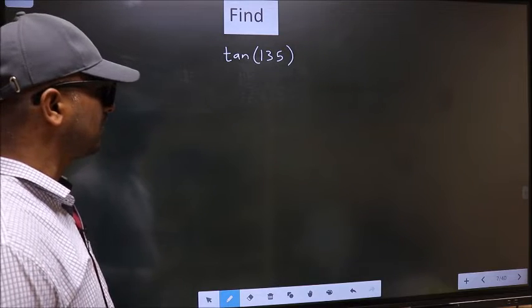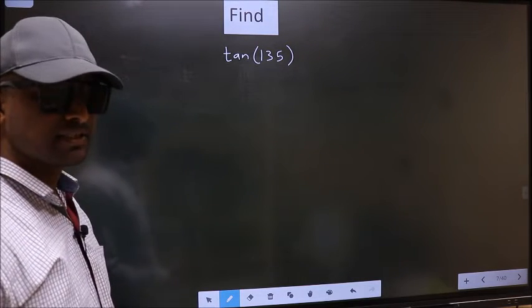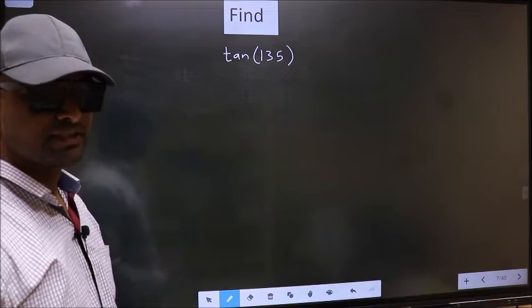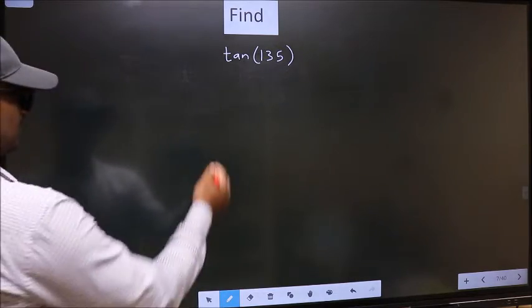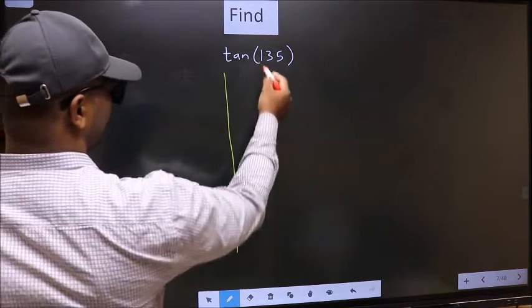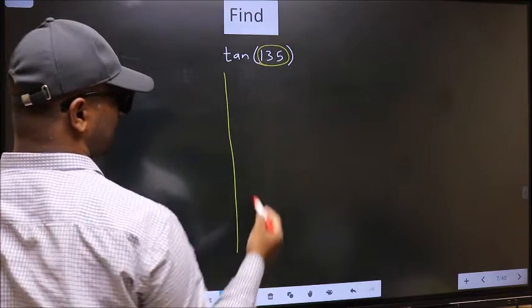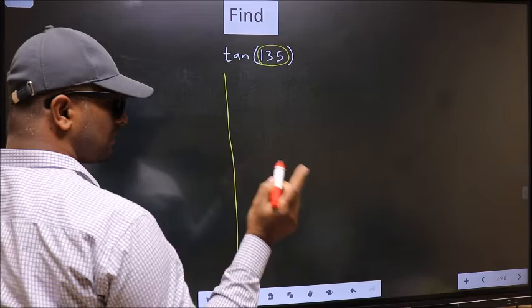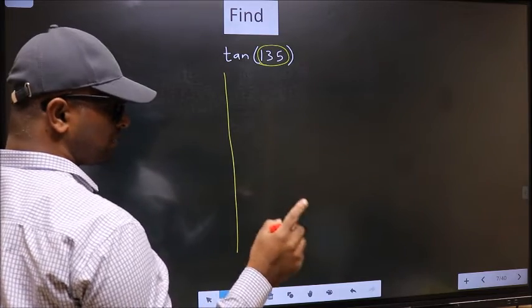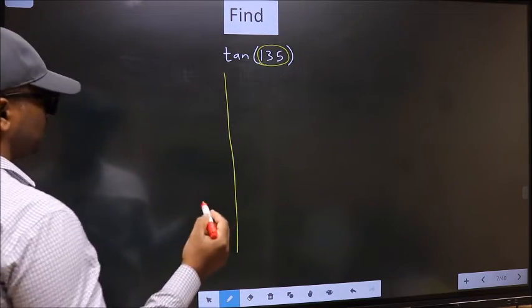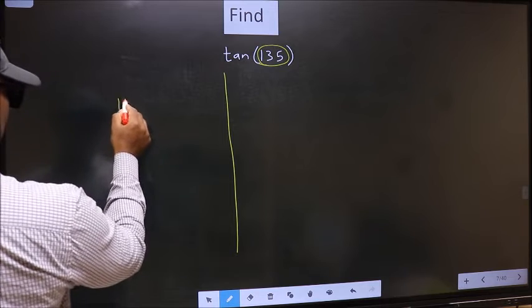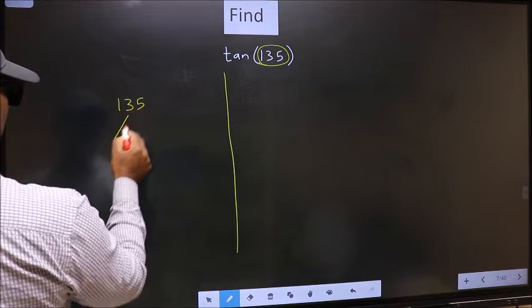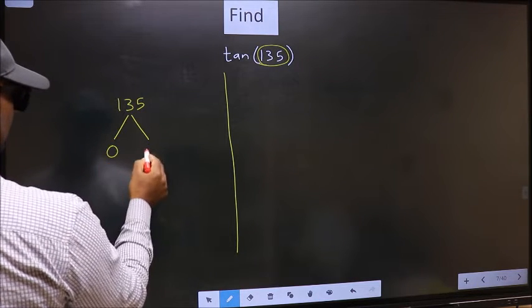Find tan 135. To find this, we should follow this method. See, here we have 135. Now we should check 135 lies between which two multiples of 180. What I mean is 135 lies between 0 and 180.